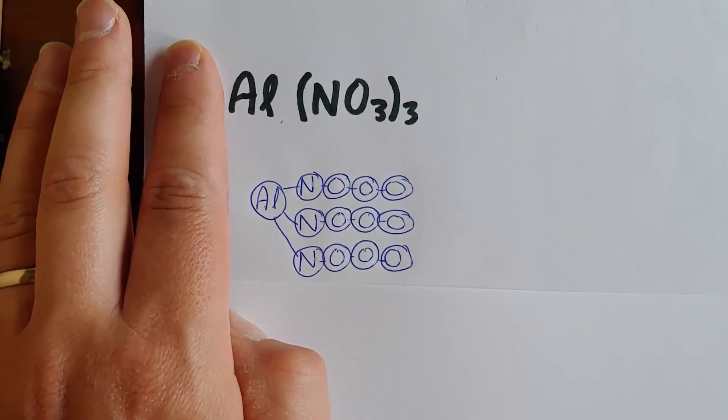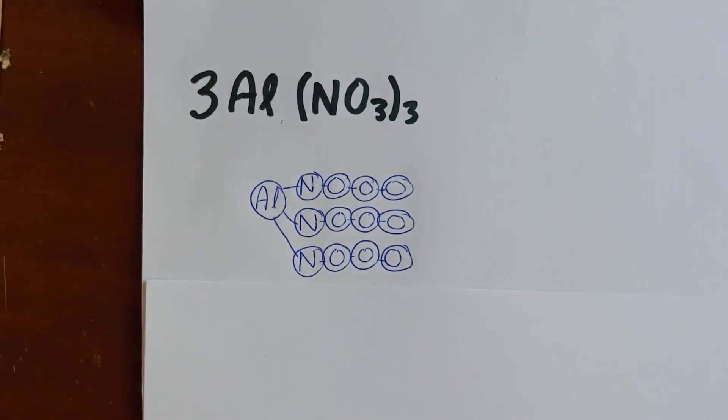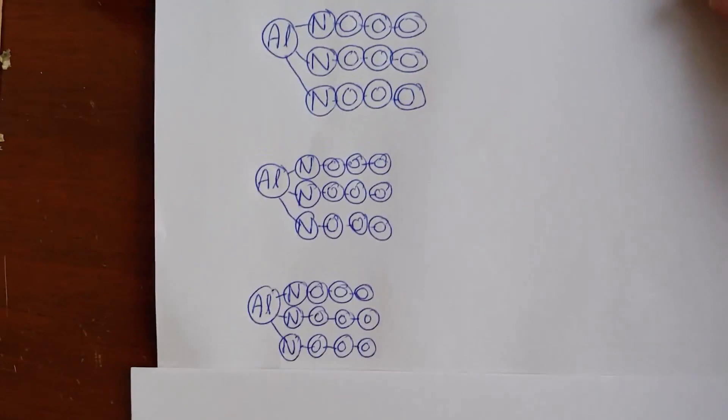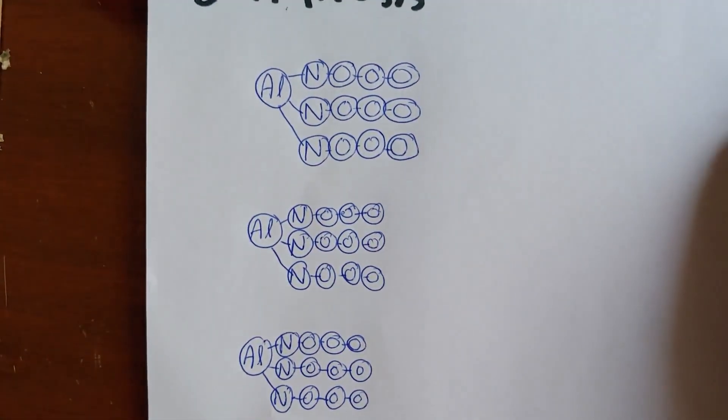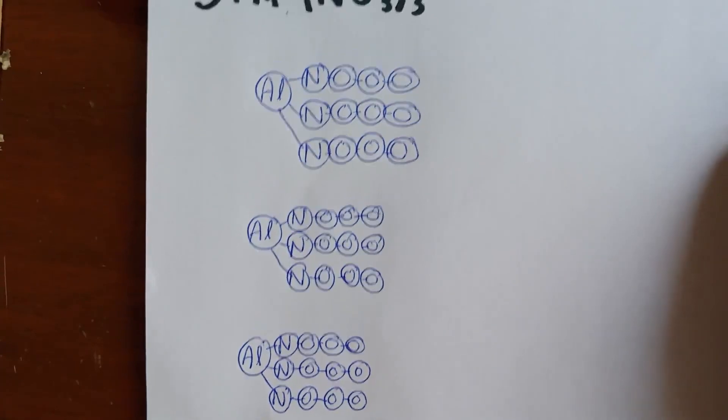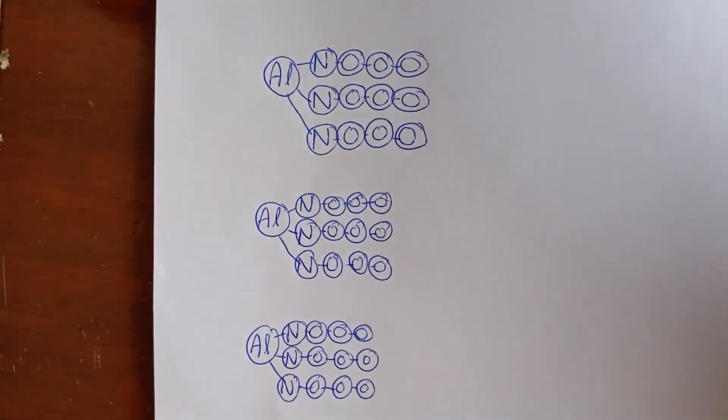Well, so that's Al(NO3)3. And then there's that annoying little coefficient. What does that big three in front mean? It means you need three copies of that molecule. Redo one of those molecules. So in order to make it all work, we have to make two more copies. So that would be 3Al(NO3)3. We've got three copies of that same molecule all together.